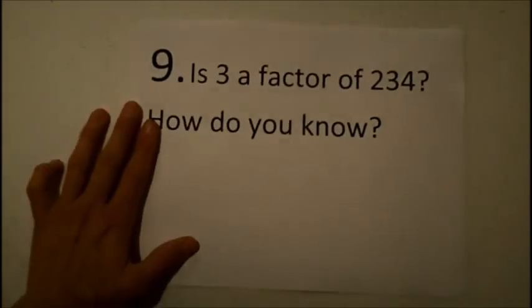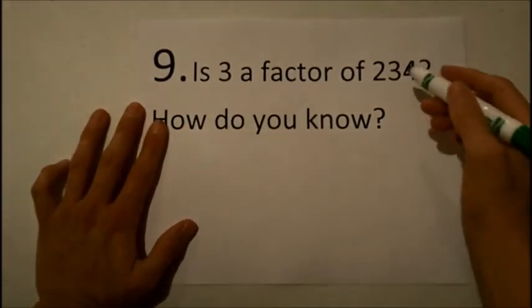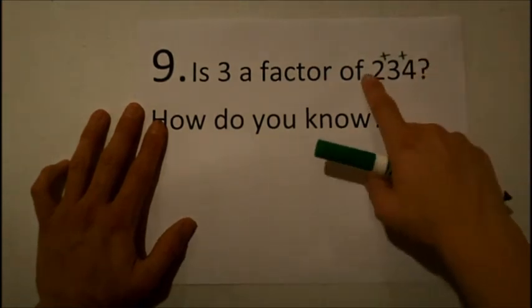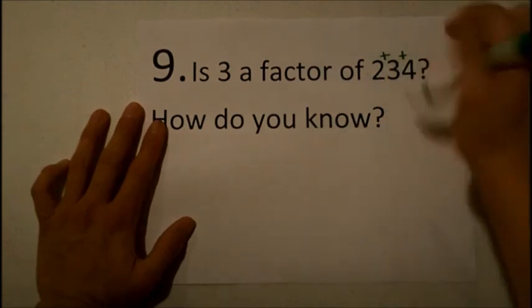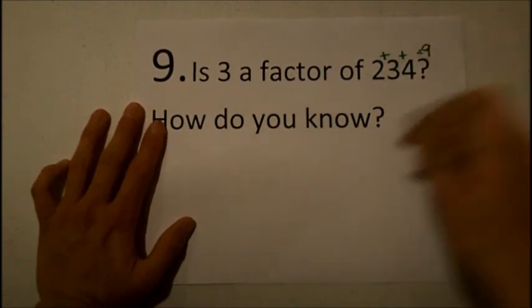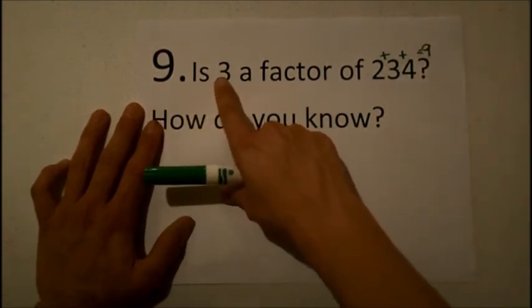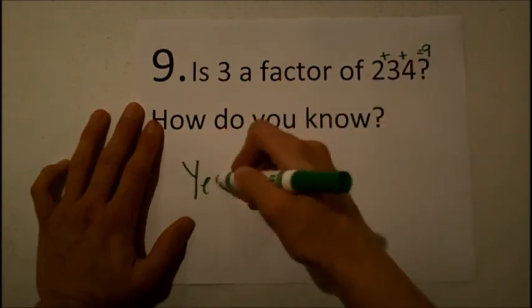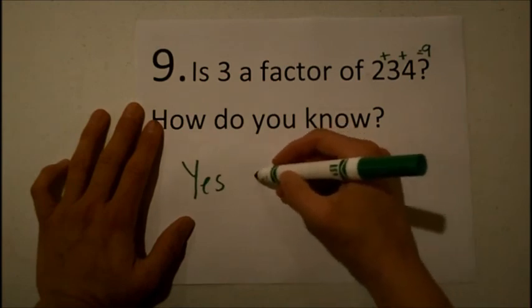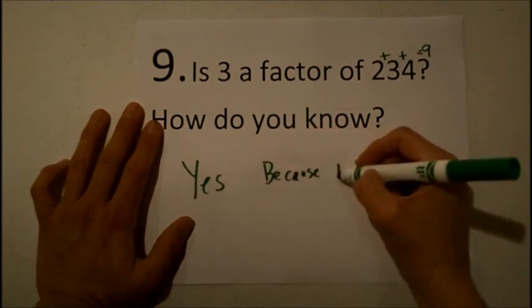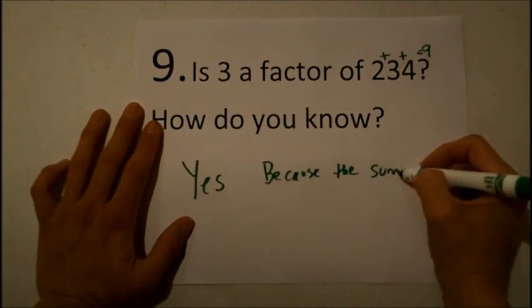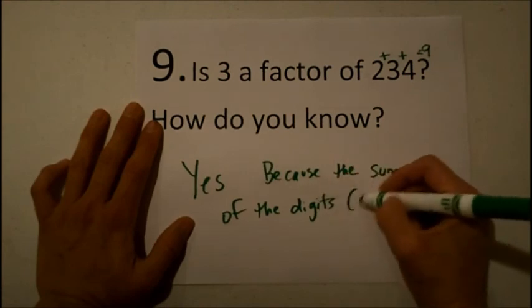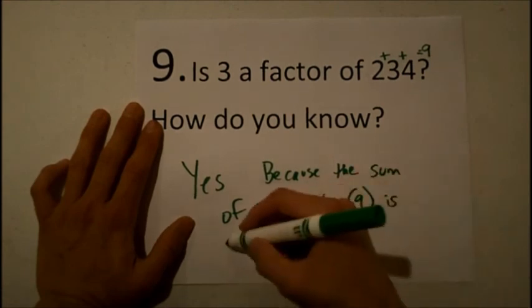Next, we have to use the 3s rule to find out if 3 is a factor of 234. The 3s rule is the one where we add each of the digits. So 2 plus 3 is 5 plus 4 is 9. The sum of the digits is 9. And since 3 is a factor of 9, we know that 3 is the factor of this whole number. So we're going to say yes, and then we're going to say because the sum of the digits, which is 9, is divisible by 3.